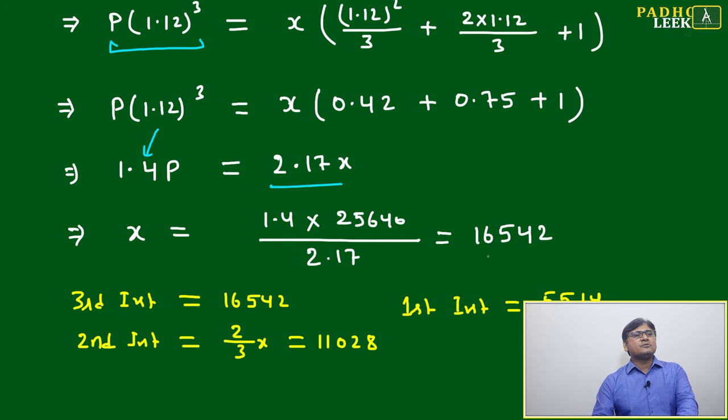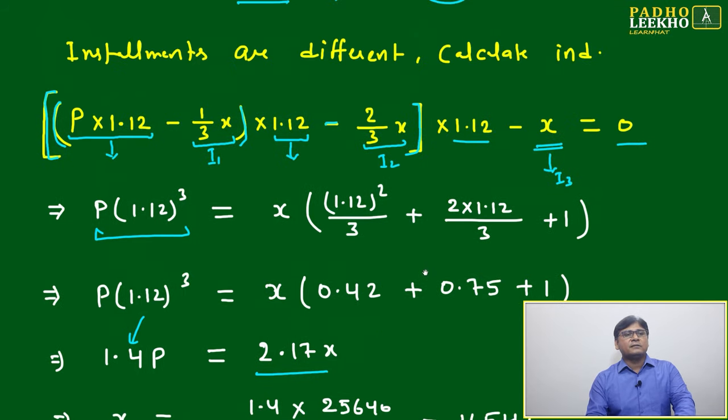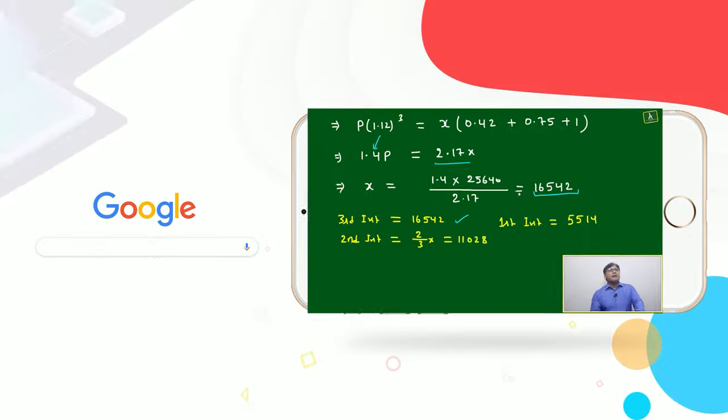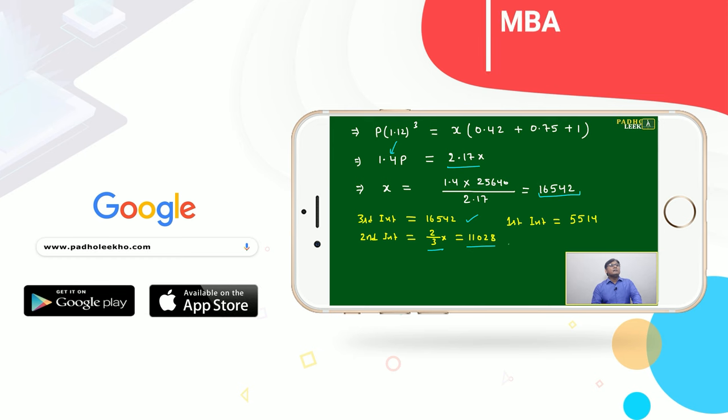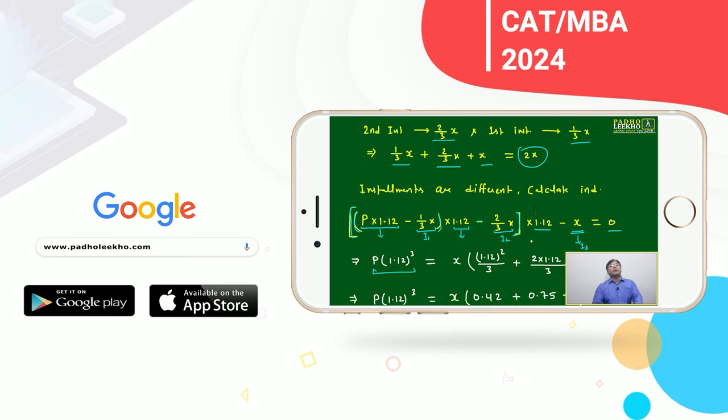You just calculate, simple calculation. It will come 16,542. That is your third installment. X is your third installment. What is your second installment? 2/3 X, that is 11,028. What is your first installment? That is 1/3 X, that is 5,514.